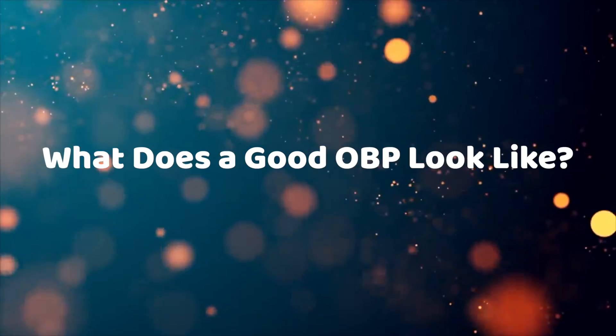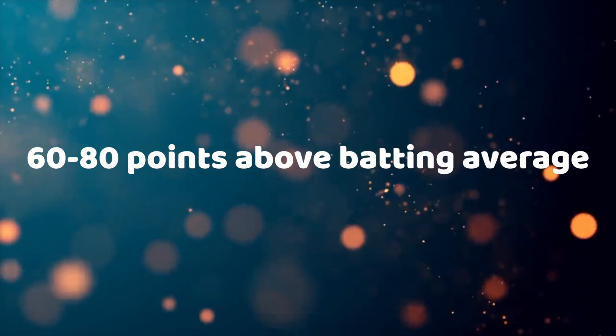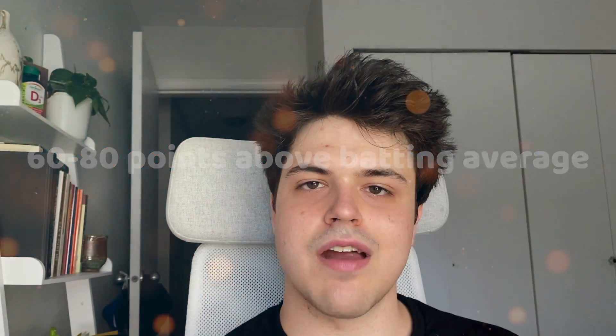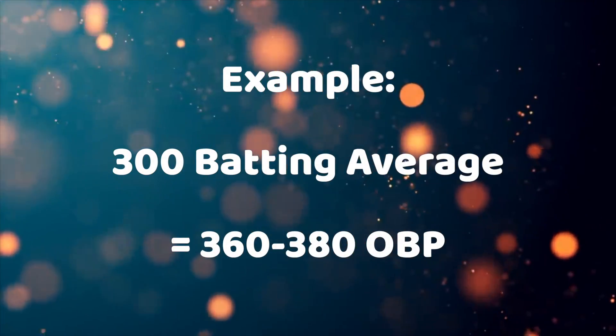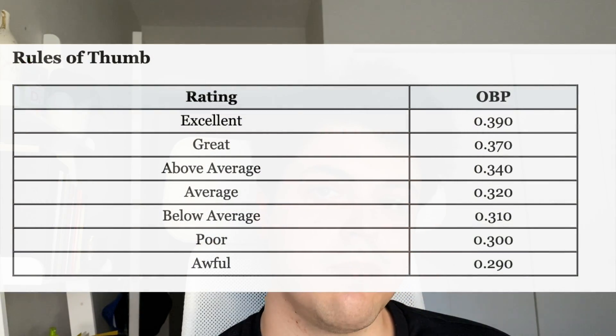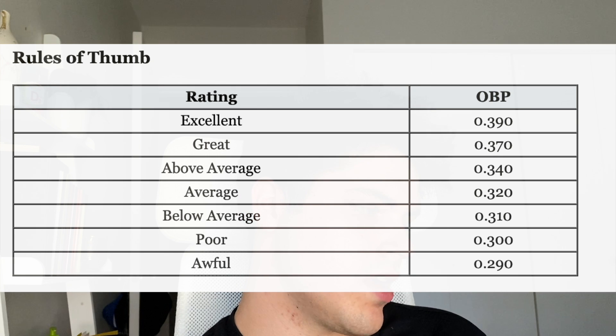OBP is different from batting average because it takes into account walks and hit by pitches. What is a good OBP? The general rule is OBP is around 60 to 80 points above batting average. For example, if a batter's batting average is .300, then their OBP is probably around .360 to .380. I found an article from 2010 which breaks down what a good OBP is: anything above .370 is amazing, but once you get below .320, you're going to find yourself in trouble or sent down to the minors. Anywhere around .320 is average, and anything above .320 is above average.